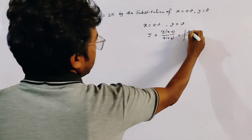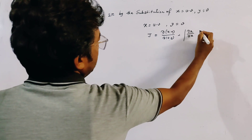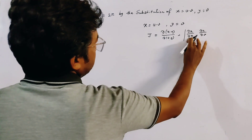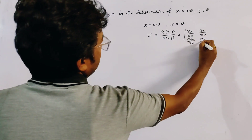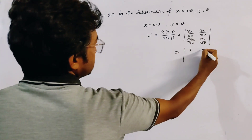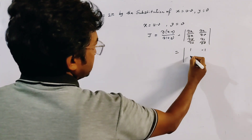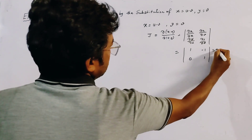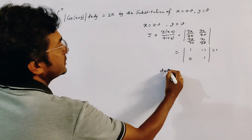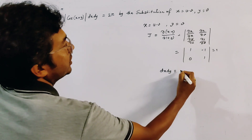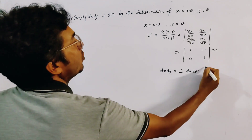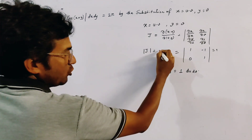The Jacobian is given by ∂x/∂u, ∂x/∂v, ∂y/∂u, ∂y/∂v. This gives the matrix entries: 1, -1, 0, 1. So the Jacobian is 1. Hence dx dy becomes 1 · du dv, since 1 is the modulus of the Jacobian.